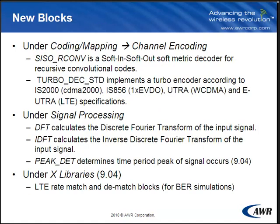Under the new block category, blocks have been added for turbo decoding and convolutional encoding. Under signal processing, there's a discrete Fourier transform block as well as the inverse discrete Fourier transform, and there's a peak detector block. Under X libraries, some new models have been added to the LTE library.